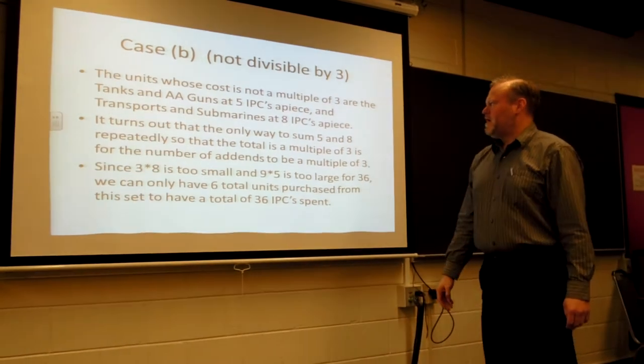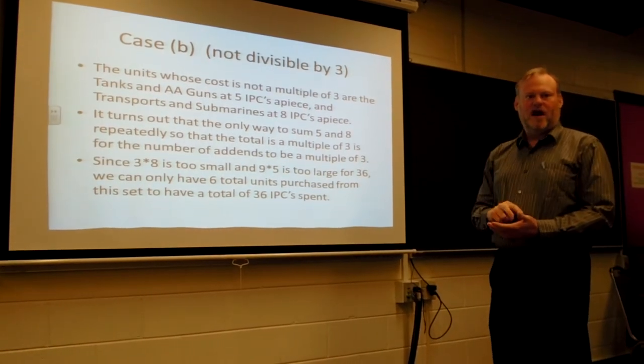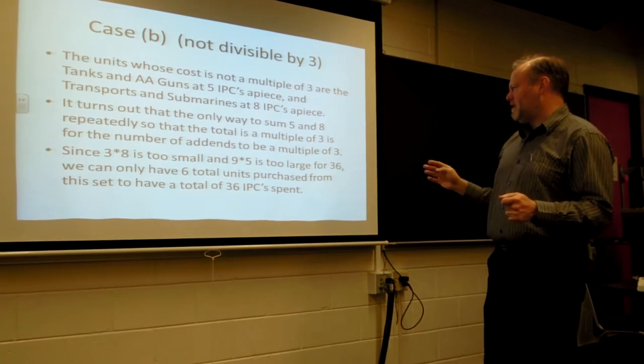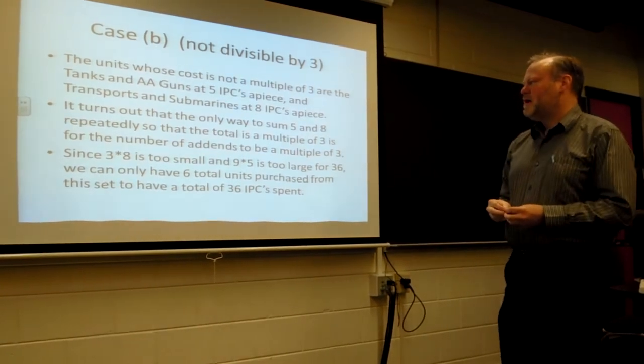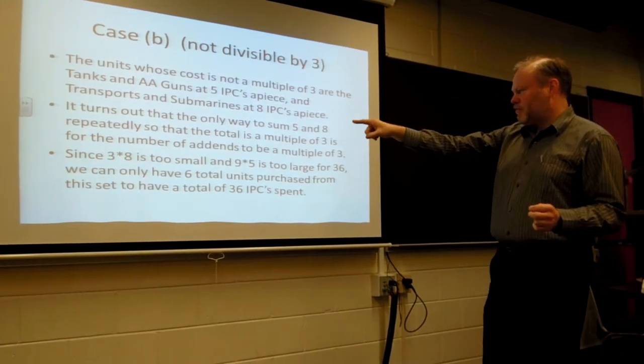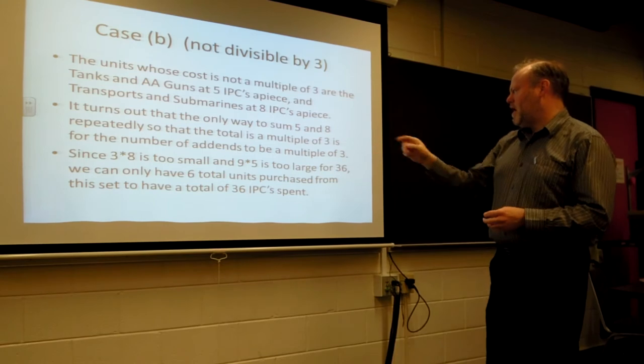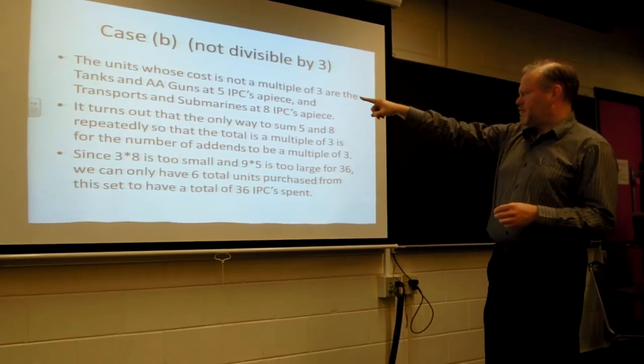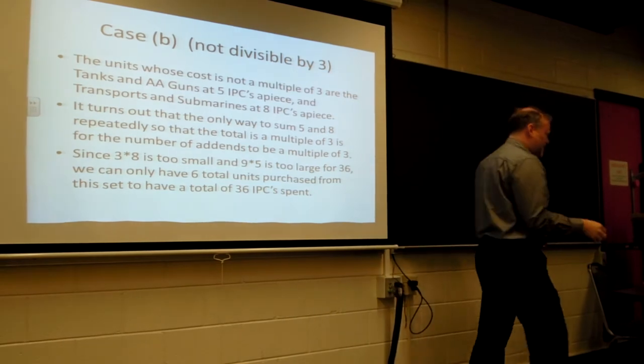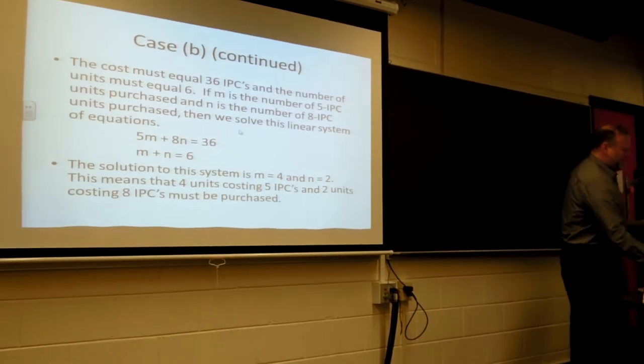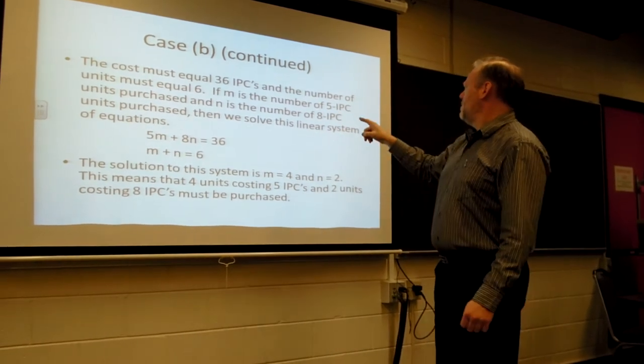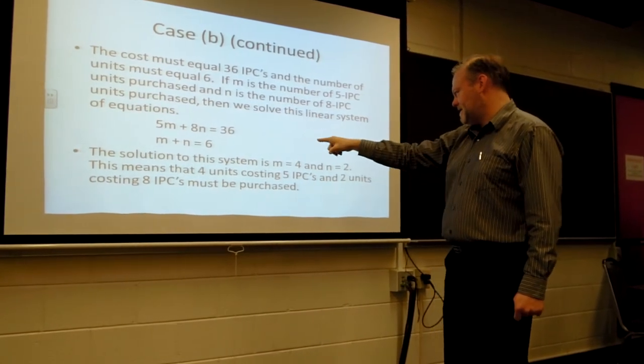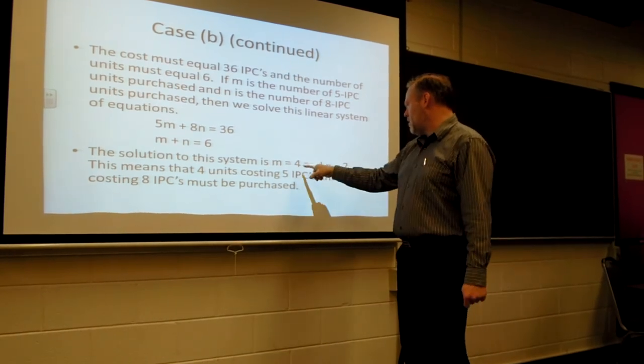For price not divisible by three, we notice that the prices are either five and eight. And it turns out that the only way that you can sum fives and or eights repeatedly, so that the sum is a multiple of three, is for you to have actually a number of values divisible by three. Three times eight is going to be too small. Nine times five is going to be too big. So it turns out we have to have exactly six units of price equal to five or eight. The sum's got to be 36, so we can set up a system of equations. If you buy n units at a price of five and m units for the price of eight, 5n plus 8m's got to be 36, n plus m's got to be six. The solution to this system is n equals four and m equals two.